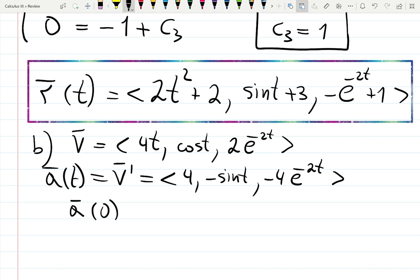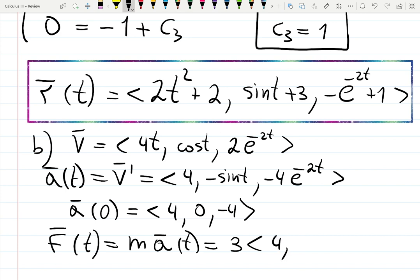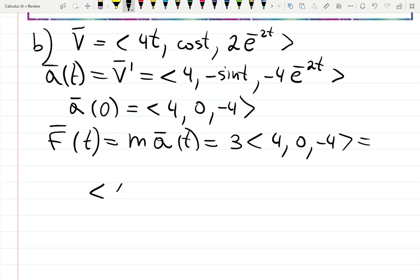So let me write down, this was a(t), and now we need to plug 0. It's going to be <4, 0, -4>. How do I know? Because sin(0) is 0 and then e⁰ is 1. Then F(t), as the formula says, force can be found by multiplying mass, which is a constant, by the acceleration vector. M is given as 3 times the vector we just found <4, 0, -4>. So the final answer will be <12, 0, -12>.